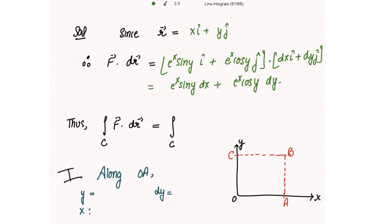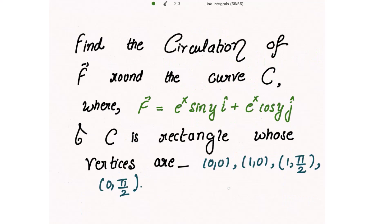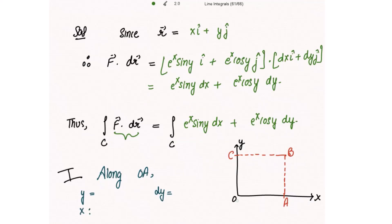The circulation equals the integral of e to the power x sine y dx plus e to the power x cos y dy. The vertices of the rectangle are: O at the origin (0,0), A at (1,0), B at (1, π/2), and C at (0, π/2).